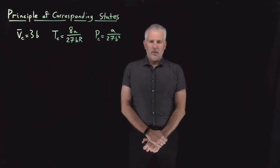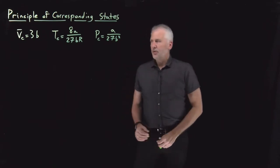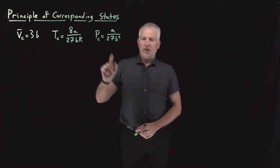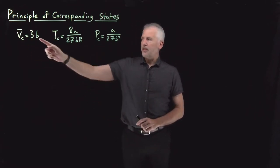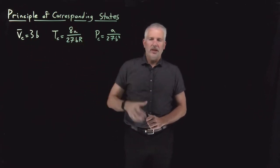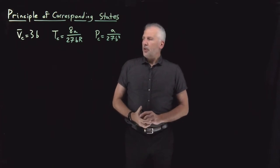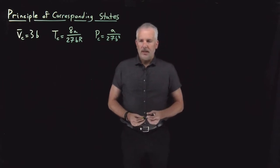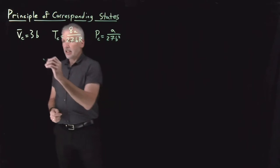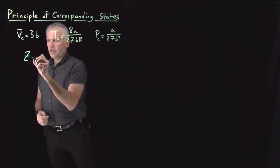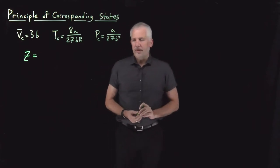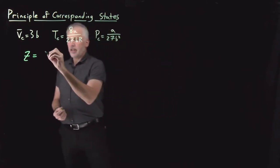By thinking about the critical point for a Van der Waals gas, we've been able to figure out that the volume, temperature, and pressure at the critical point can be expressed in terms of the Van der Waals coefficients. The critical point is at relatively high temperatures and high pressures — conditions where we might not expect the gas to behave very ideally. So let's remember the concept of the compressibility factor, which tells us exactly how ideally a gas behaves.